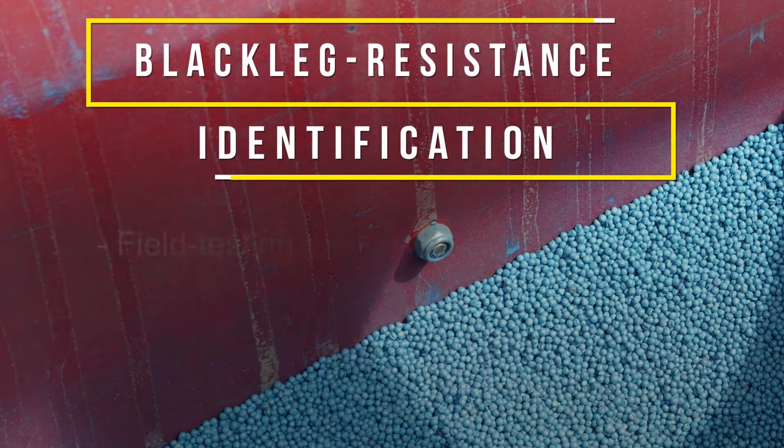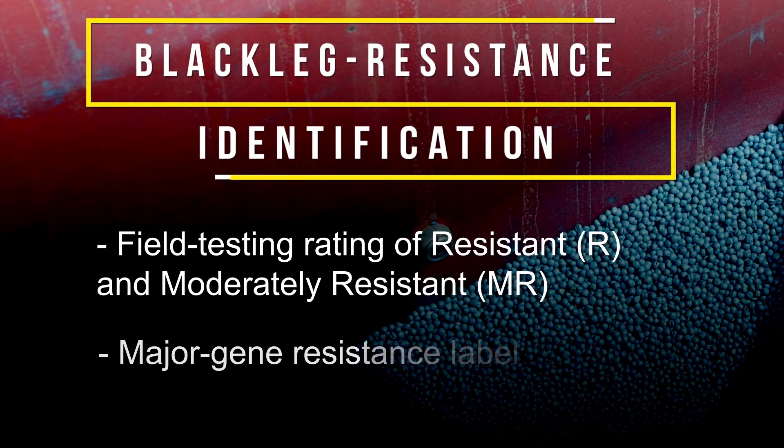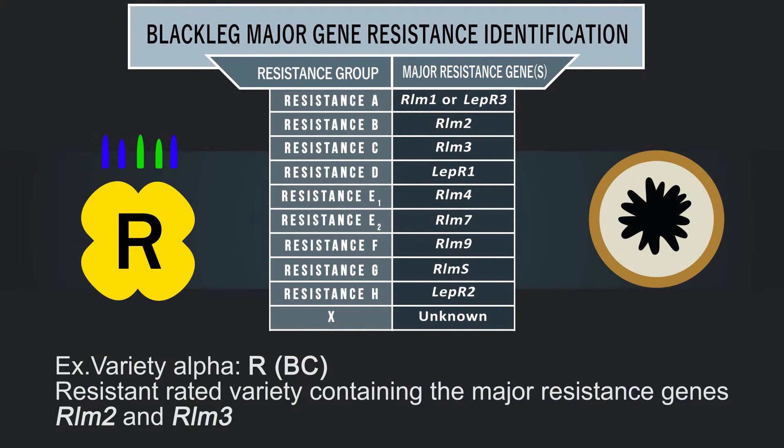Blackleg resistance identification will still incorporate the old field testing rating of RMR, but now seed developers have the option to add resistance gene labels to the field testing rating. Identifying the resistance gene will allow producers to pick varieties with a different major gene profile.